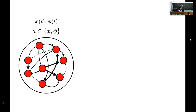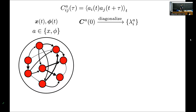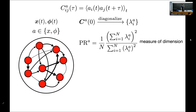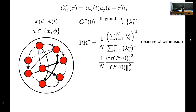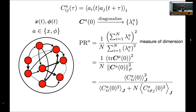I'll address this with a calculation. I have two sets of variables, the X's and the phi's — the pre and post activations — and I'll let A denote either one. I'll compute the covariance matrix of the activity with some time lag tau. To compute the dimension, I'll take the zero time-lag covariance matrix, diagonalize it to get eigenvalues lambda, and define the dimension as the participation ratio of the spectrum, normalized by N. The participation ratio is a soft measure of the number of large eigenvalues. I can re-express this as the trace squared and Frobenius norm squared, then break it down into on- and off-diagonal statistics of the covariance matrix.